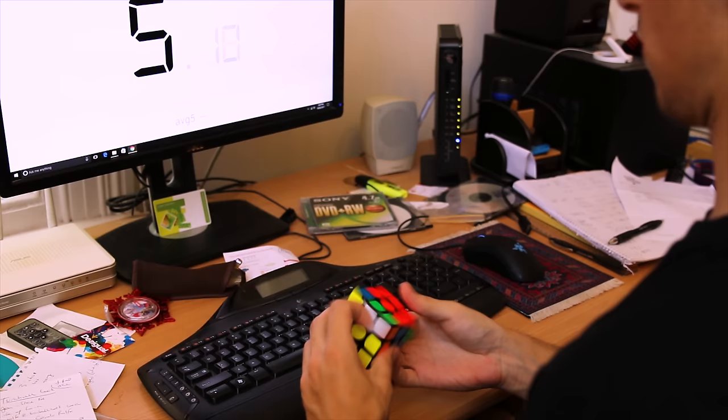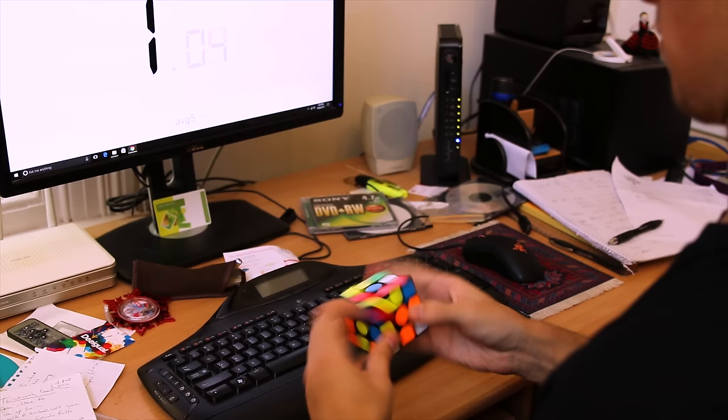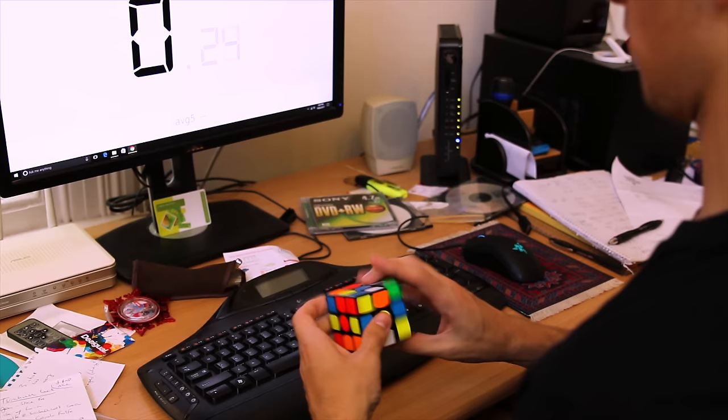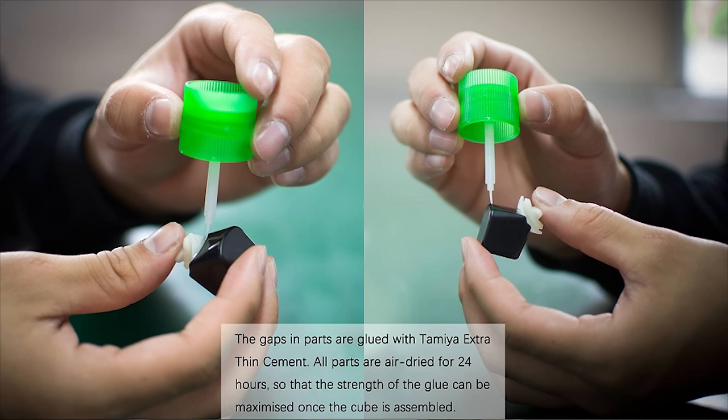After magnetic cubes were released onto the market, the team at GAN decided they wanted to mass produce them in their factory. At that stage it was merely an idea, and after collaboration with the Cubicle Labs team, I was sent some initial prototypes for the GAN 356 AIR UM. Essentially these cubes contained different strength magnets, and my role was to test them out with a variety of different setups.